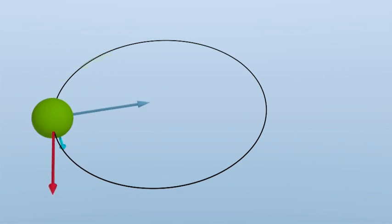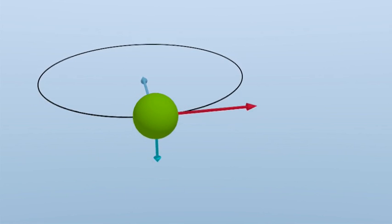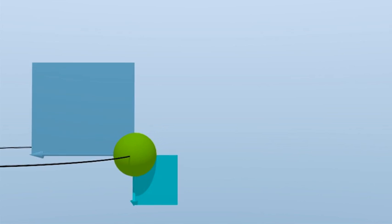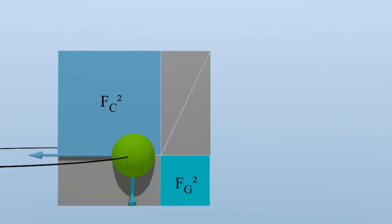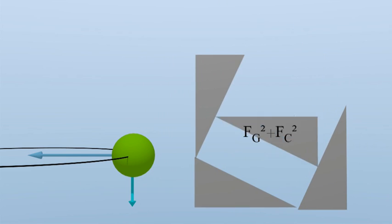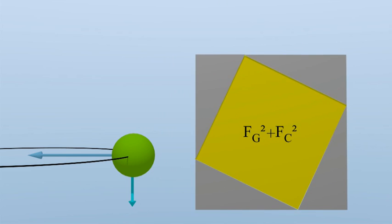This could be for example a force on a rope attached to our object responsible for the circular motion. According to the Pythagorean theorem, the magnitude of the force is the square root of the sum of the weight squared and the centripetal force squared.